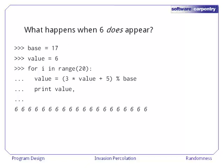What happens when six does appear? Well, as you can see, once the sequence hits the value six, three times six plus five, mod 17 is six again, and so our sequence gets stuck.